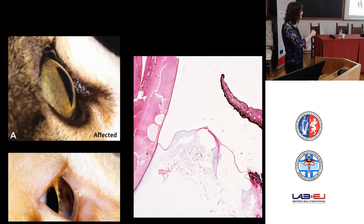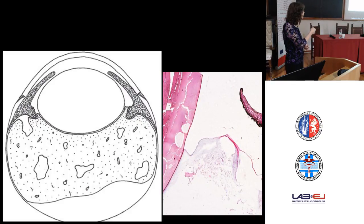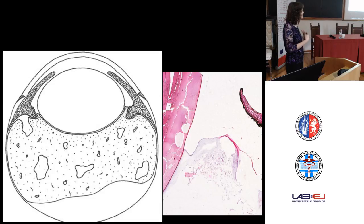Aqueous humor misdirection syndrome, characterized by Dick Dobiltzik and his group, shows cats with a much shallower anterior chamber compared to normal. It is thought that the vitreous is pushed forward because aqueous humor is leaking into the vitreous, forming pockets that displace the vitreous forward, increasing pressure within the globe.